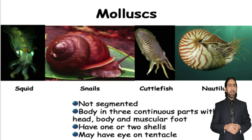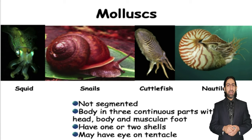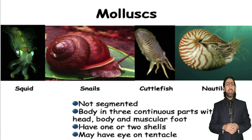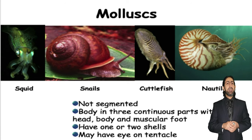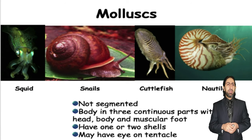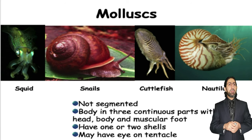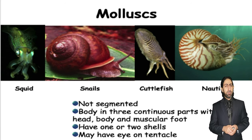Regarding mollusks — such as squid, snails, cuttlefish, and nautilus — they do not have a segmented body. The body is divided into three continuous parts: head, body, and muscular foot. Some of them have a shell externally, as in most types, while others may have it internally.